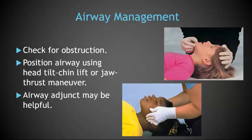The first steps to airway management is to do a good general assessment of the patient. You need to remember the anatomy of the pediatric patient and remember what could possibly be the issue. The first thing you should do is check for obstruction. Position the airway using the head tilt chin lift or the jaw thrust maneuver. Airway adjuncts, even your basic airway adjuncts, may be helpful. Airway is always the first step in managing any respiratory emergency.